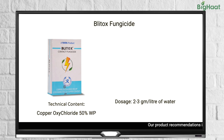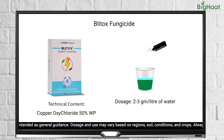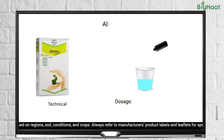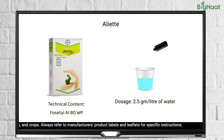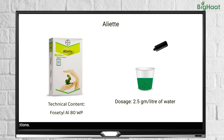To prevent damping off or collar rot, you can use Blitox at 2 to 3 grams per litre of water, or Eliot at 2.5 grams per litre of water.